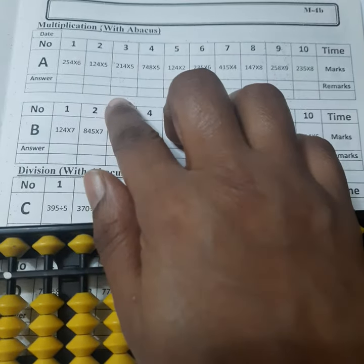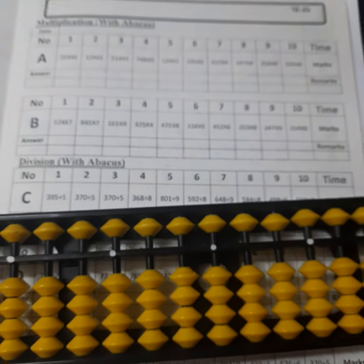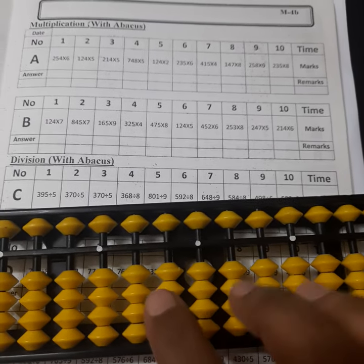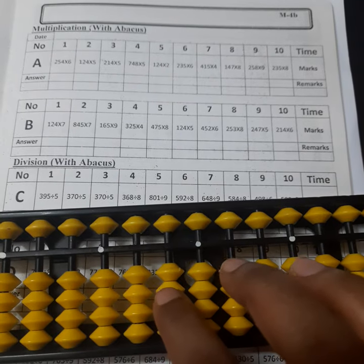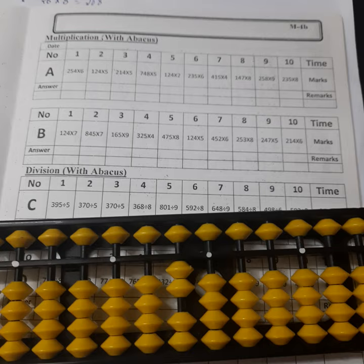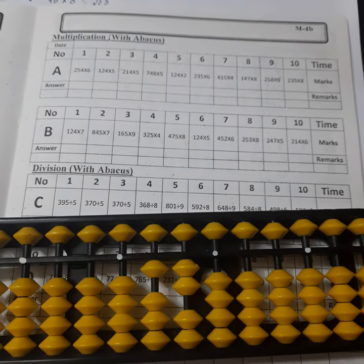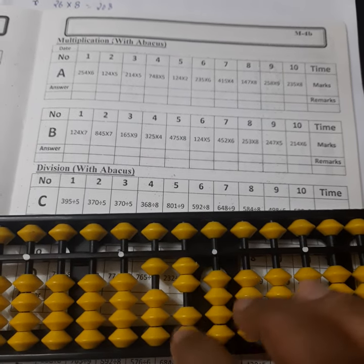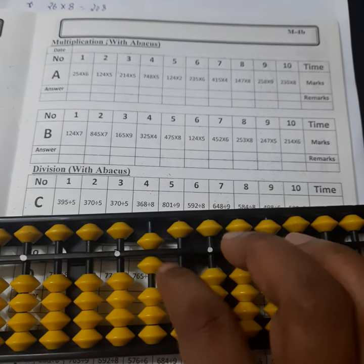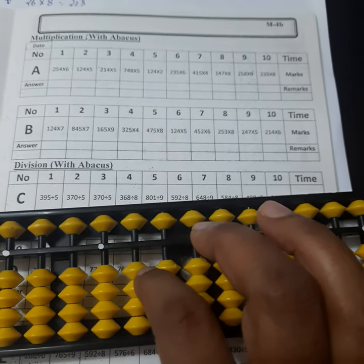Again, next question. 5 times 4 is 20. 5 times 4 is 20. 5 times 2 is 10. 5 times 1 is 5. The answer is 620.